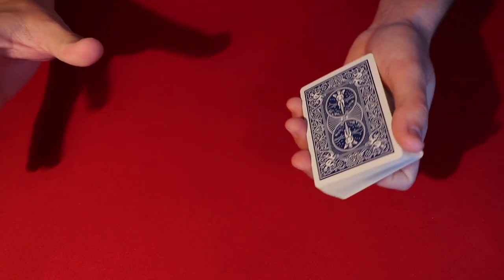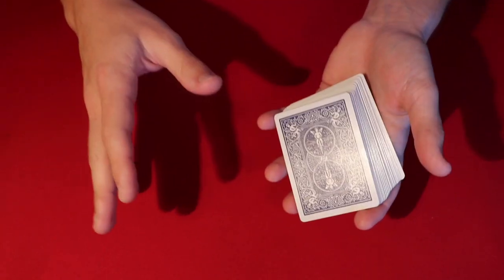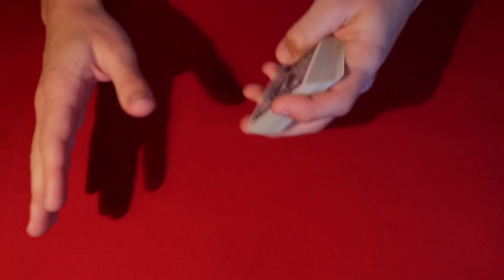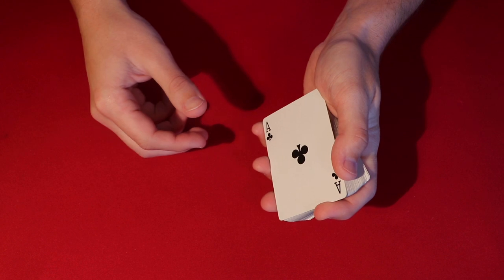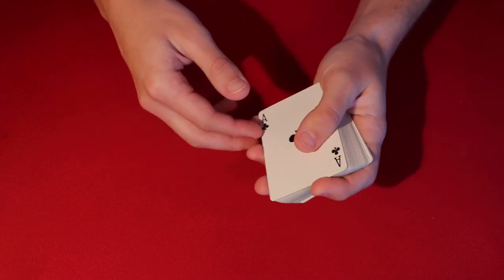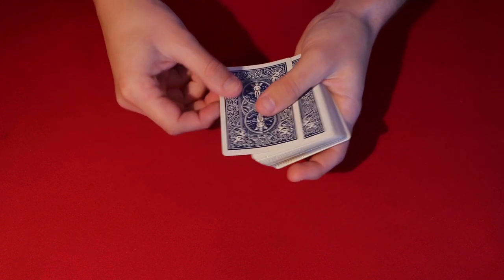The next thing you have to do is say, alright, so based on my assumptions here, based on how you've been talking to me, I truly believe your card, it wasn't the Ace of Clubs. It wasn't the Ace of Clubs.